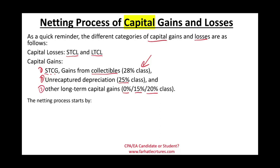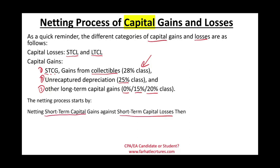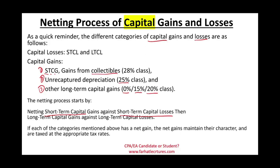The netting process starts by netting short-term capital gains against short-term capital losses. The first thing you do is break down the short-term gains with the short-term losses. Then you net out the long-term gains against the long-term losses. If each of the categories has a net gain, then the net gain maintains its character — whether that is collectibles at 28%, unrecaptured depreciation, or other long-term capital gains.